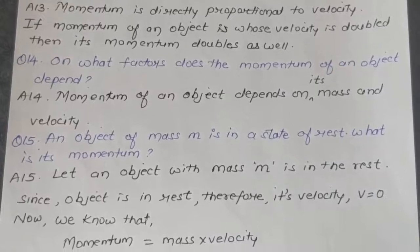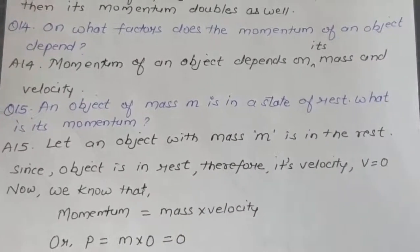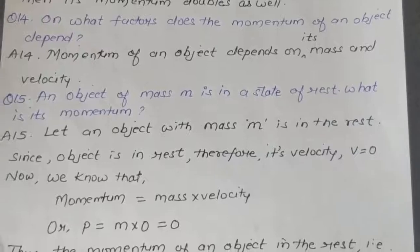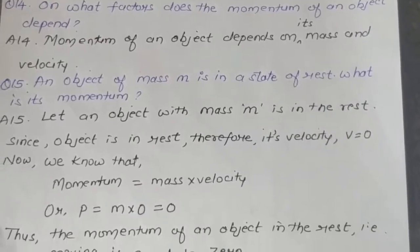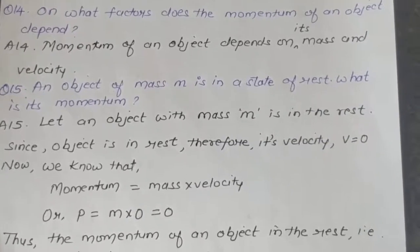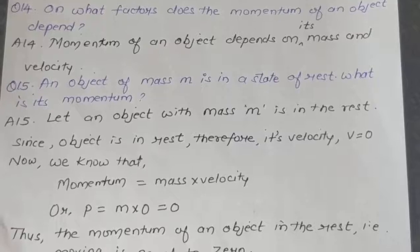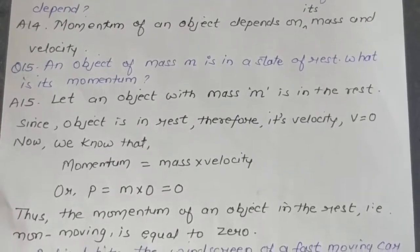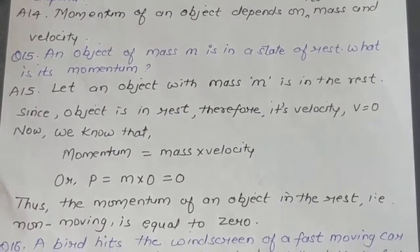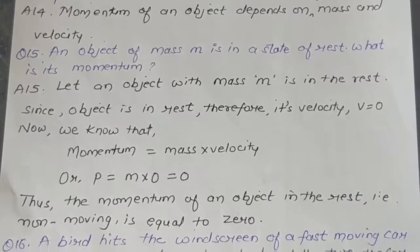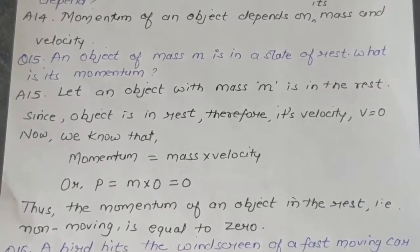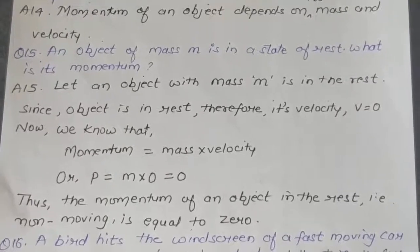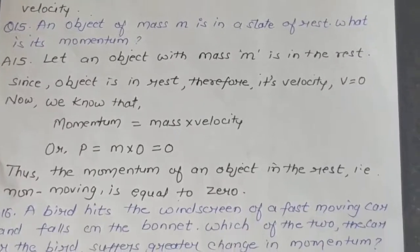Question 15: An object of mass m is in a state of rest. What is its momentum? Answer: Since the object is at rest, its velocity v = 0. Since momentum p = m × v, we get p = m × 0 = 0. Therefore, the momentum of a non-moving object is equal to zero.